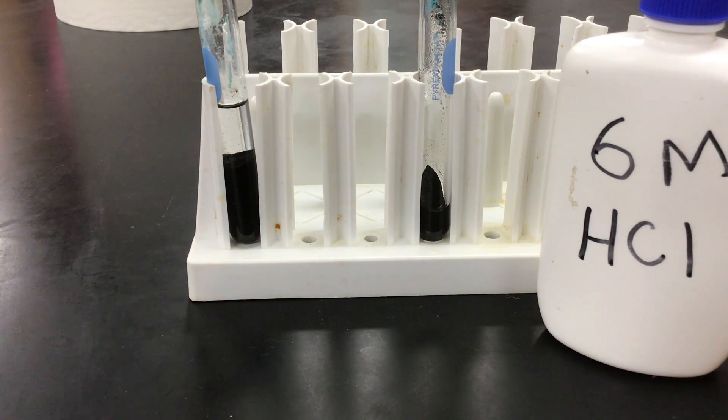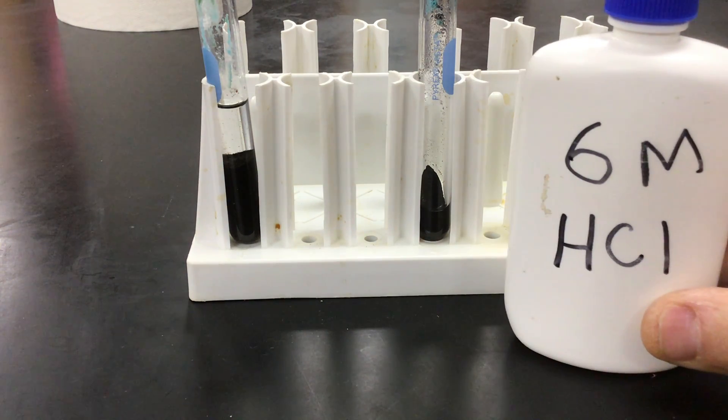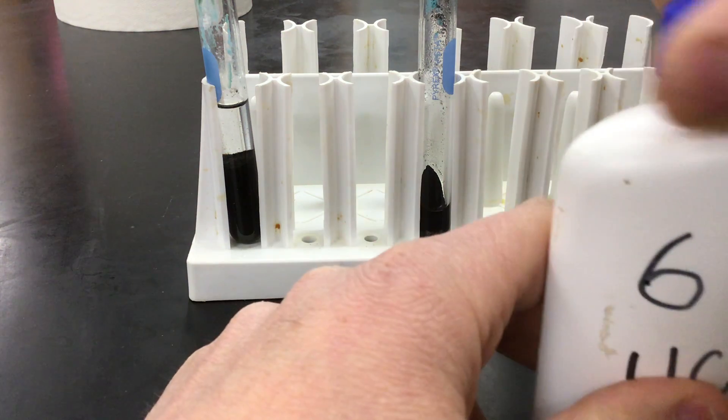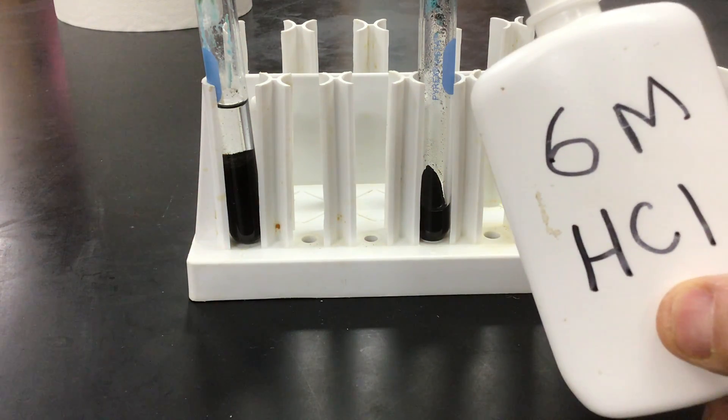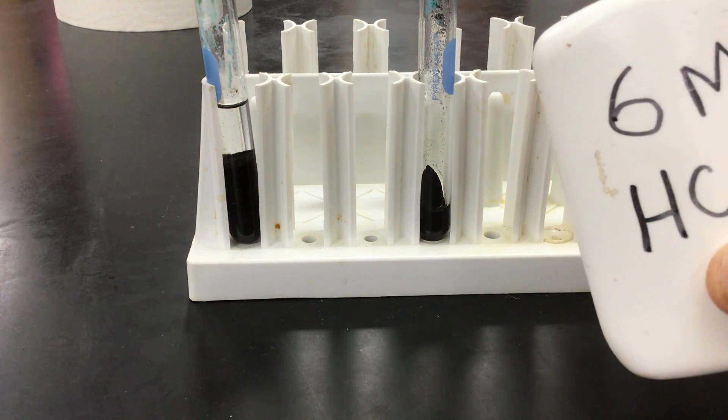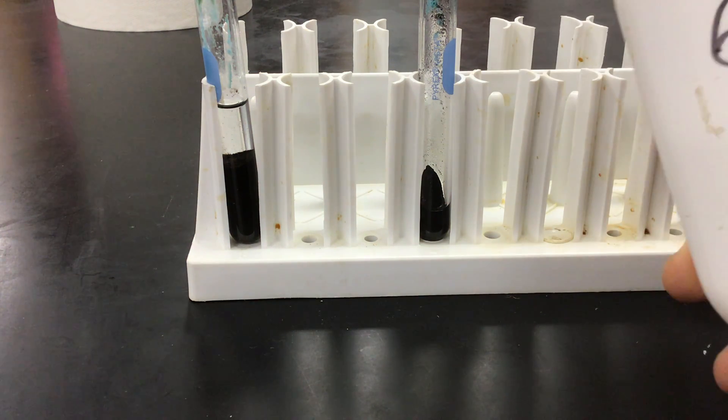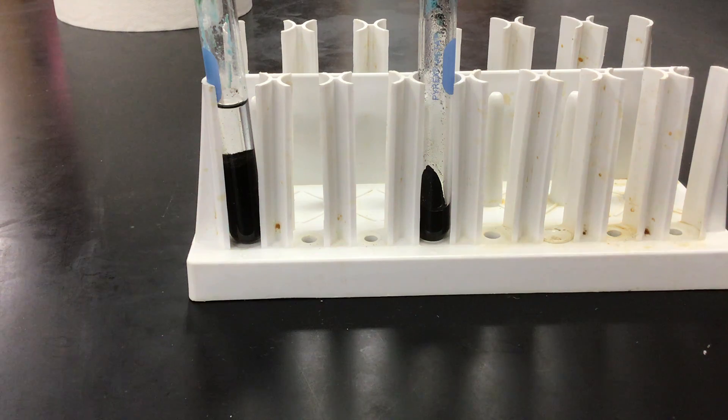So now in step four, after cleaning the precipitate, we are now going to add six-molar hydrochloric acid. Six-molar hydrochloric acid is an acid, it's aqueous. It's an aqueous solution, and it is colorless. So we have a black solid and a colorless liquid.